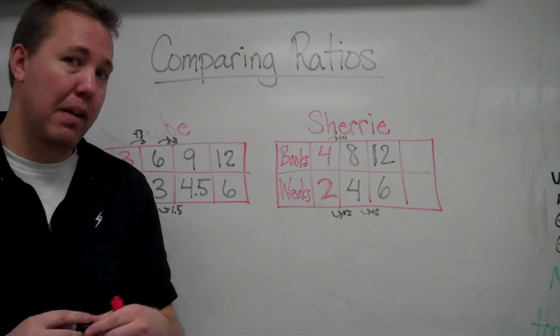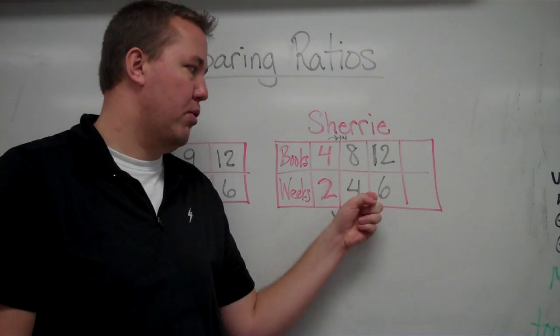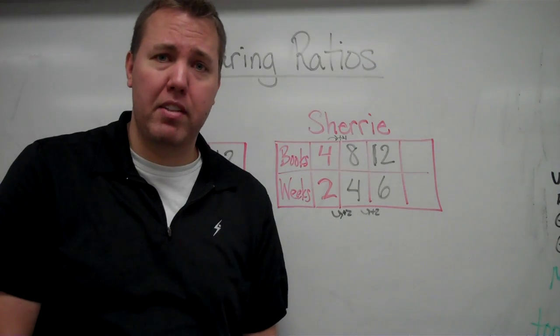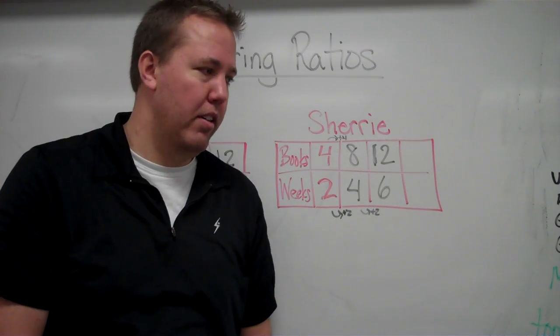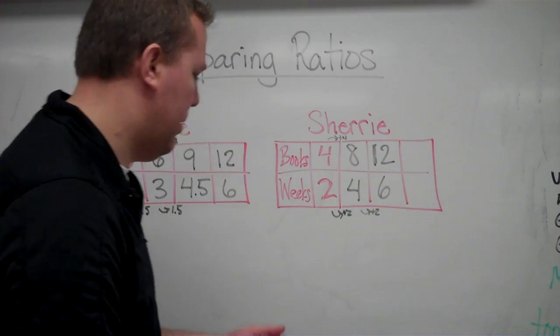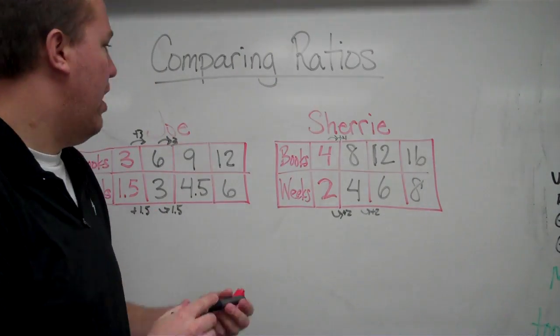As we look at this comparison, Joe reads twelve books in six weeks. Sherry reads twelve books in six weeks. I think in six weeks they'll have a pleasant surprise that they're the same. And one of them will need to pick it up.